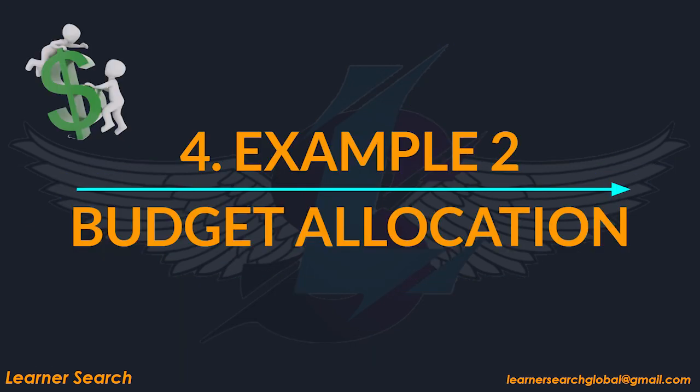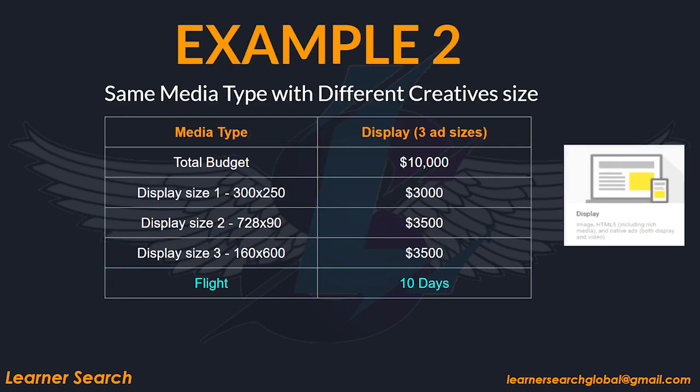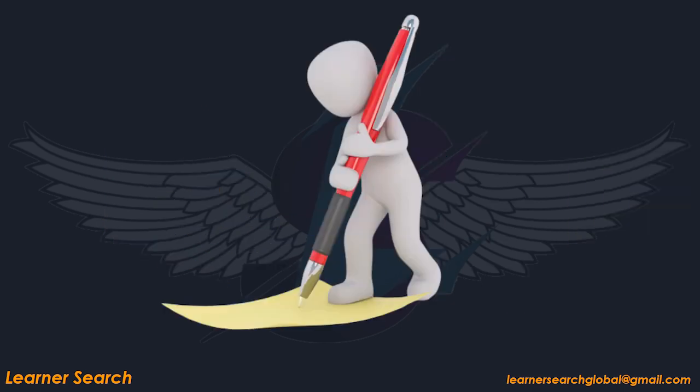Let's look at another example and see how we would create a campaign based on the given media plan. In this plan, the only media type is display. It is planned to run with different creative sizes with different creative messages to run in rotation. The flight duration is 10 days. Now, pause this video for one minute before going to the next slide and draw a basic outline of the campaign structure on a piece of paper. This allows you to practice and learn.